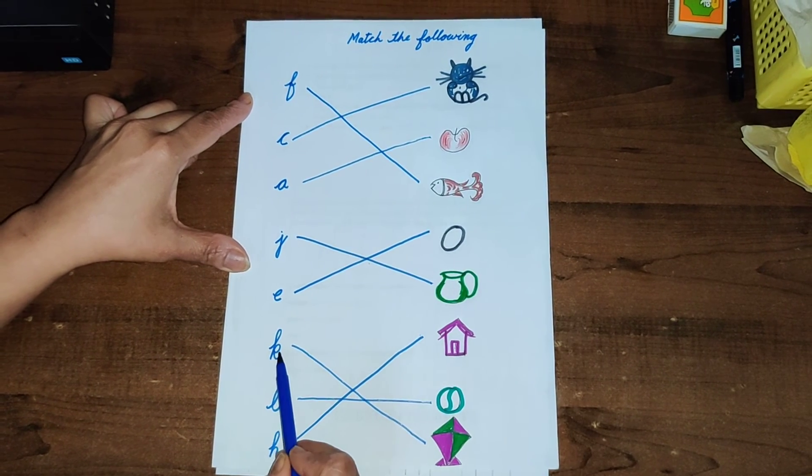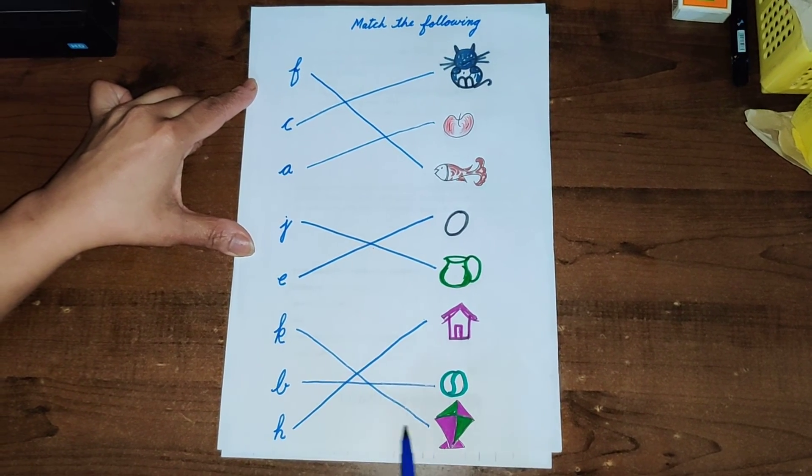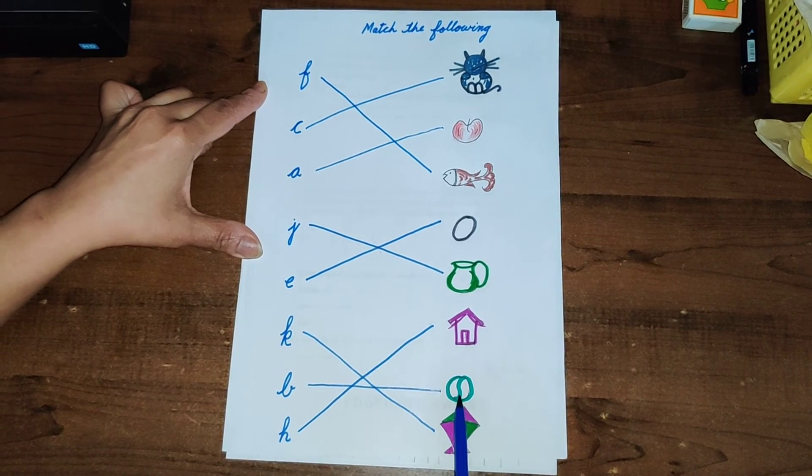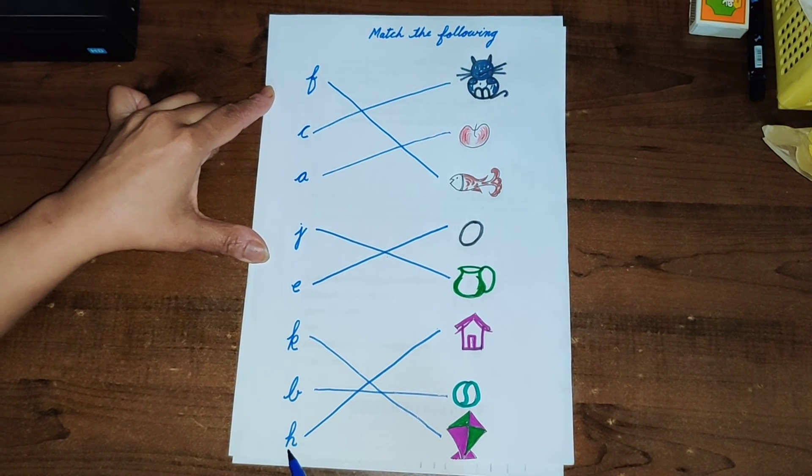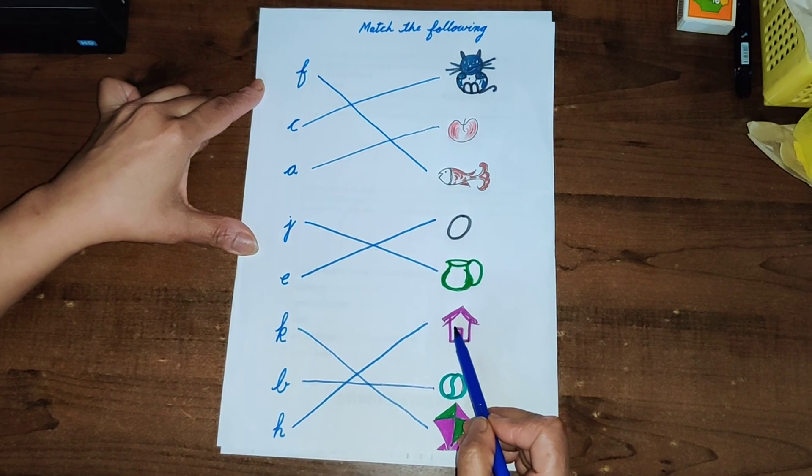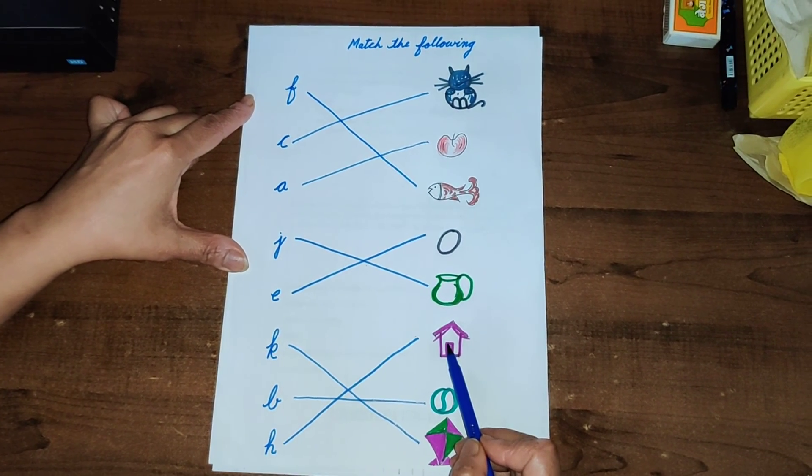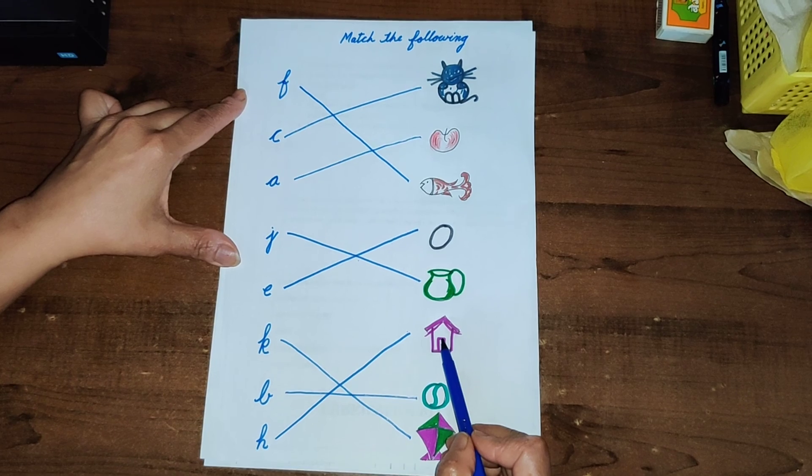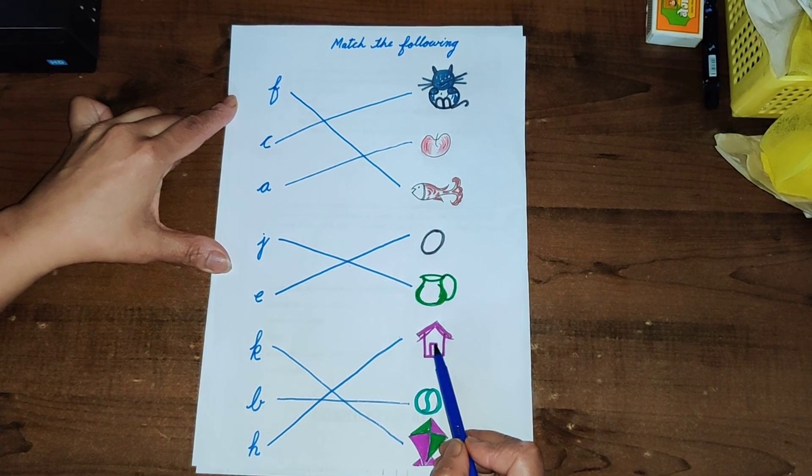E for egg, K for kite, B for ball, H for hut. That's it, so practice it and watch this video to learn properly. Bye bye.